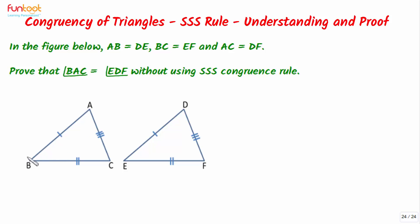So it is given in the question that AB is equal to DE, BC is equal to EF, AC is equal to DF, and without using the SSS congruence rule, we have to prove that angle BAC is equal to angle EDF.